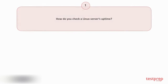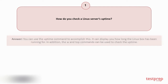Question number 1: How do you check a Linux server's uptime? You can use the uptime command to accomplish this. It can display how long the Linux box has been running. In addition, the w and top commands can also be used to check the uptime.